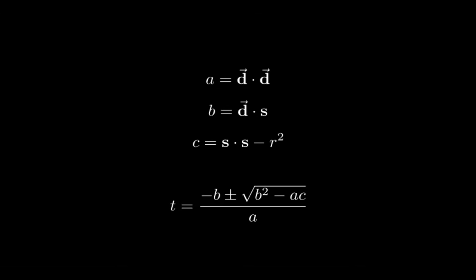Also noteworthy is the fact that the dot product of D with itself is nothing else than the squared magnitude of our direction vector. Since we are assuming that D is a purely directional vector, its magnitude must be 1.